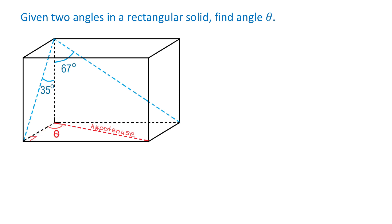But how can we find these sides if we are just given two angles? Since we are not given any dimensions, we will assign the height of this solid a certain value, then calculate the length and the width in relation to this height. To keep it simple, let's assign the height the value of 1.